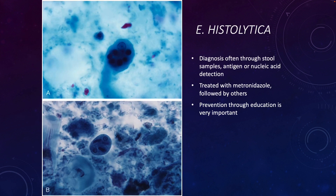Generally the infection is diagnosed through stool samples — you look for the trophozoites and cysts in the stool. It is possible to do antigen or nucleic acid detection as well, but they can be seen in the stool. They are eukaryotic organisms that are relatively large as far as cells go. They can be treated with metronidazole, followed by other drugs if metronidazole doesn't work. Prevention through education is important: appropriate sanitation, washing one's hands, and cooking food thoroughly really help to prevent infection.